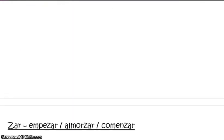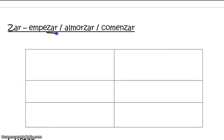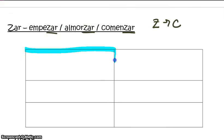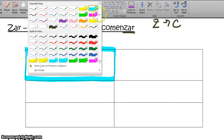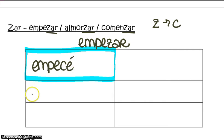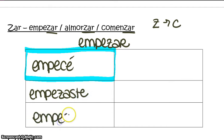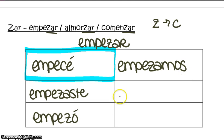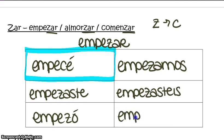Finally, we have our ZAR verbs, such as EMPEZAR, ALMORZAR, and COMENZAR. In these cases, the Z changes to a C only in the yo form. Let's conjugate EMPEZAR: yo EMPECÉ, tú EMPEZASTE, él/ella/usted EMPEZÓ, nosotros EMPEZAMOS, vosotros EMPEZASTEIS, and ellos/ellas/ustedes EMPEZARON.